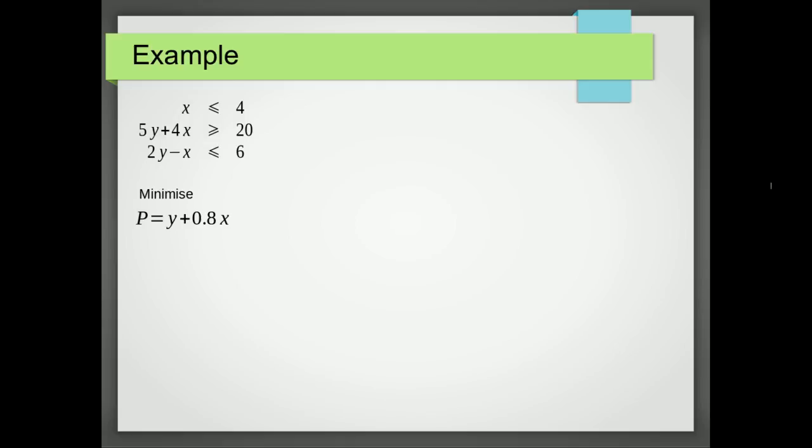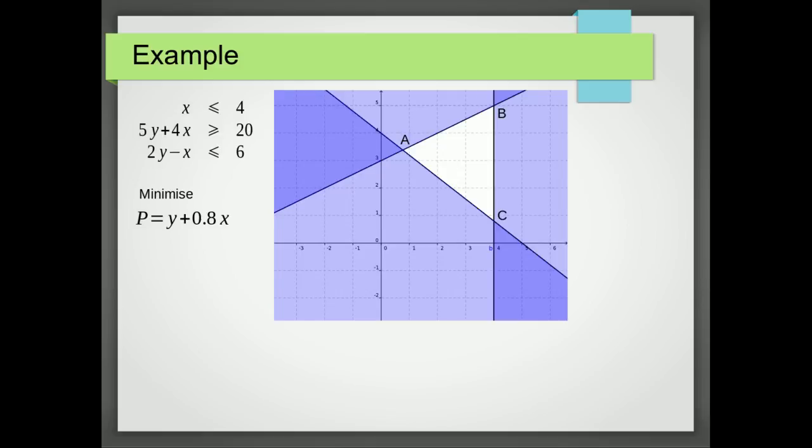Okay, here's an example of a problem that gives us multiple solutions. So we've got our constraints and we've got our objective function, which we're trying to minimize. So the first thing we do is draw the feasible region. We then find the coordinates of the vertices, which I've labeled A, B, and C.